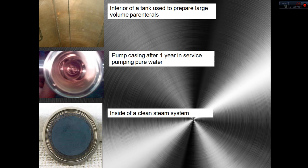Yes, I know that 'stainless' means no stain, but that's not always the case. As we can see in the top picture, that's the internal surface of a tank used to prepare parenterals, and the red color is iron oxides. In the picture in the middle, the red color is again iron oxide, and that picture came from a pump that was pumping pure water. At the bottom we can see a black residue, which is also iron oxide — it's just that the composition, the relation between oxygen and iron in this oxide, is different. That sample was taken from a metal piece in contact with pure steam.